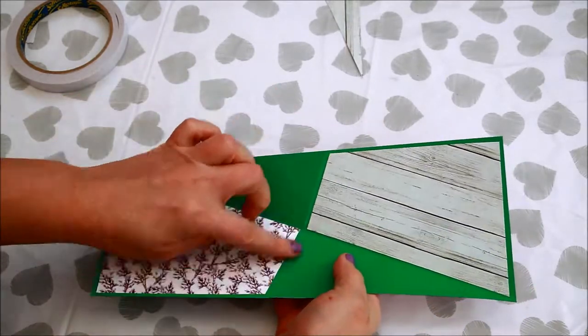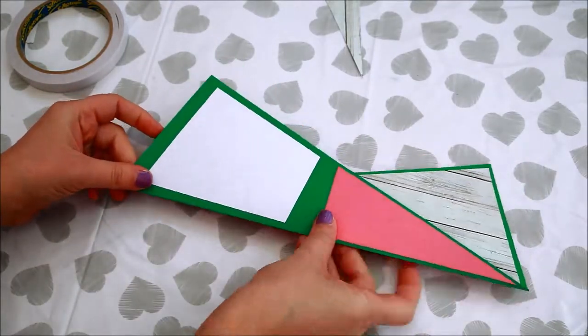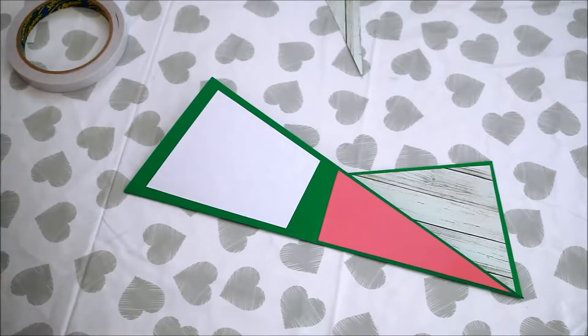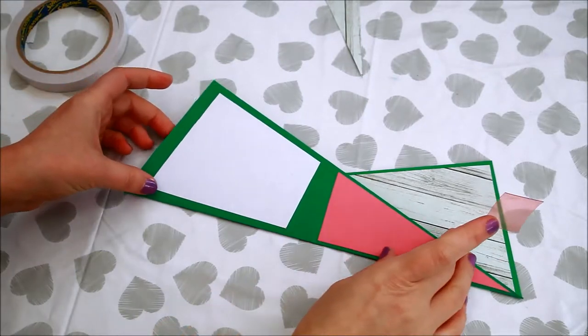The next step is optional. You can leave the card as it is or you can add a bit of double sided tape to fix the two parts together.